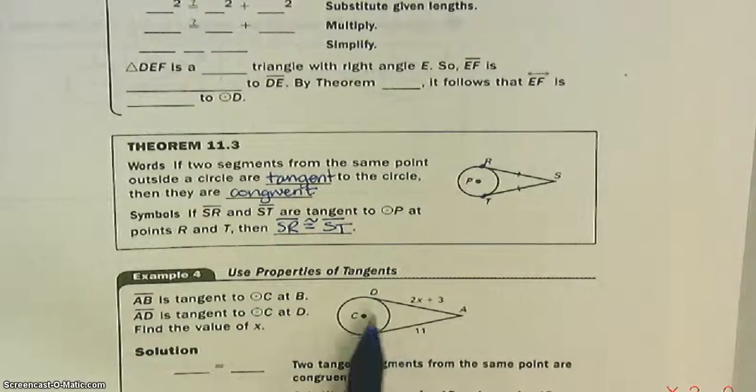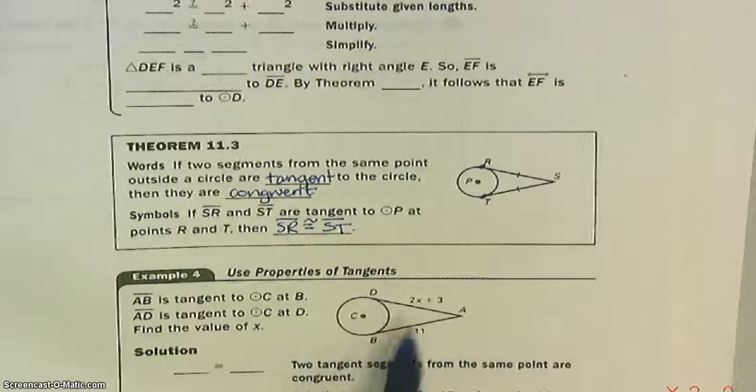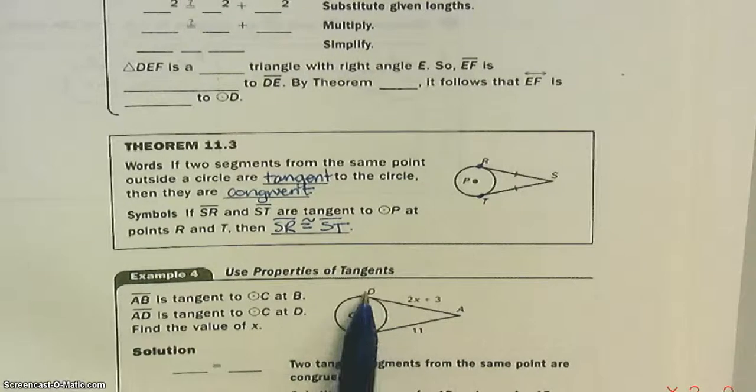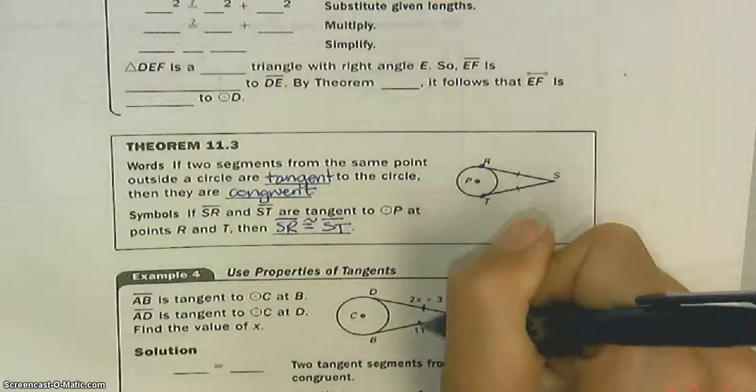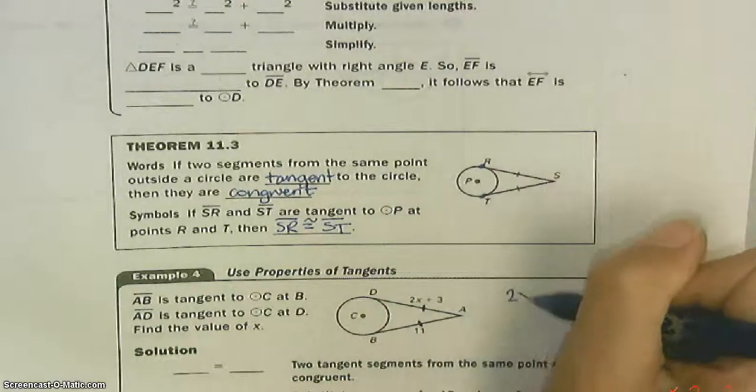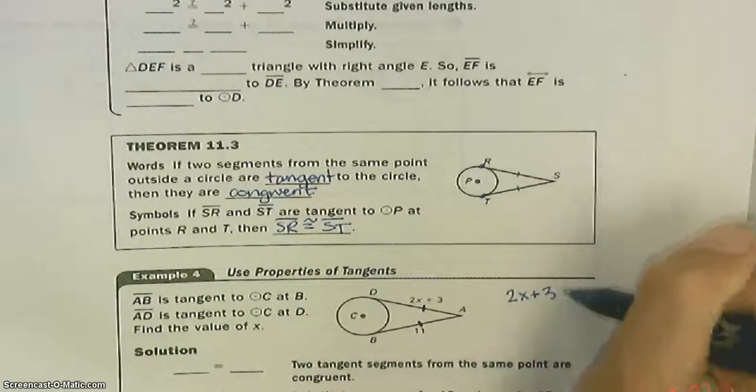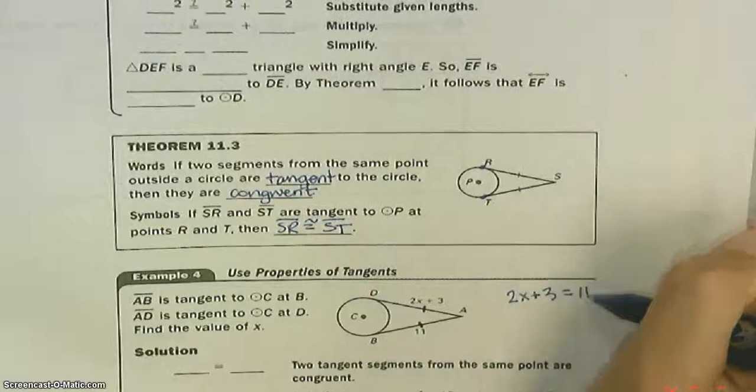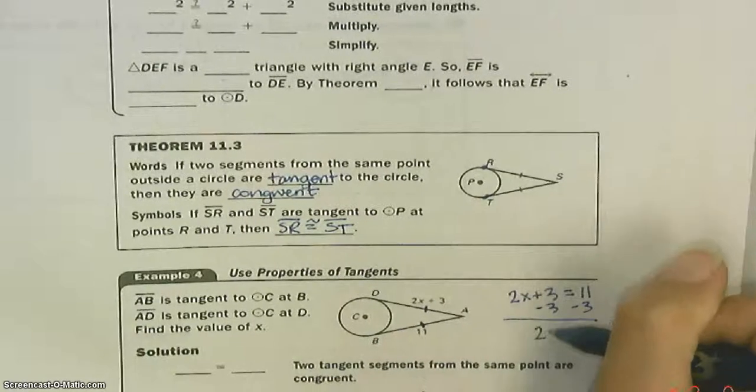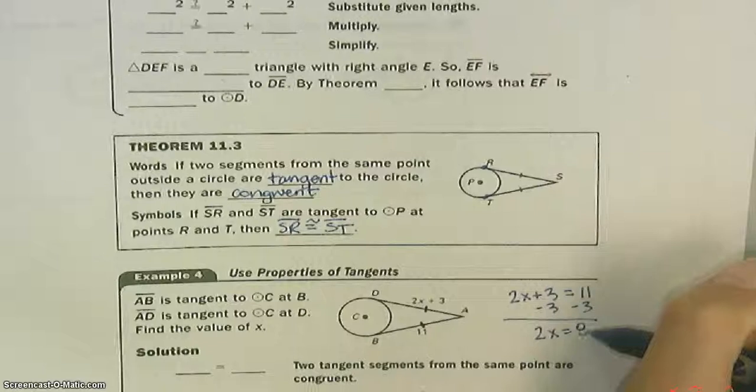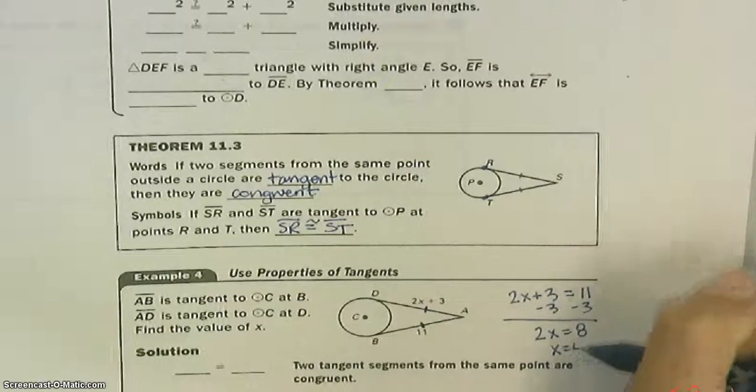If you look at this example, it says AB is tangent and AD is tangent. If they're both tangent, they have to be equal to each other. 2X plus 3 has to equal 11. X is equal to 4.